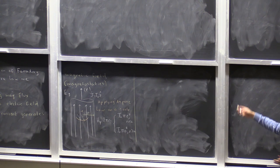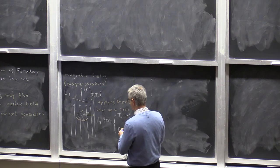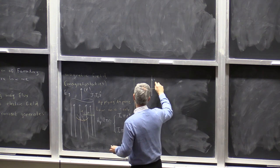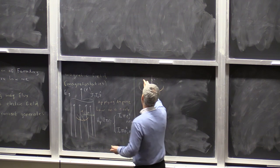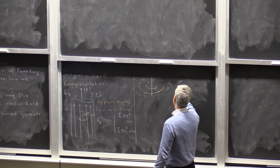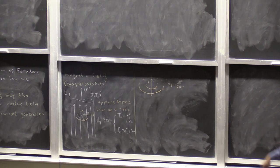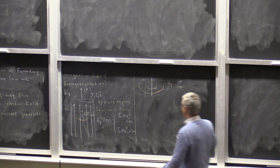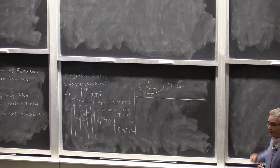For a thin wire carrying current I, the magnetic field circulating around the wire is I divided by 2 pi R. That is what we know from magnetostatics. Now here is the corresponding problem in Faraday's law.